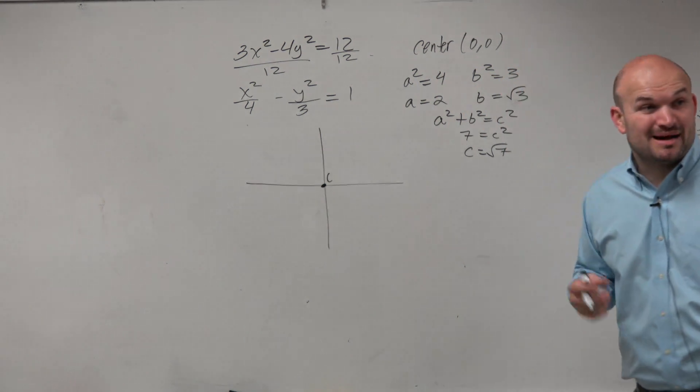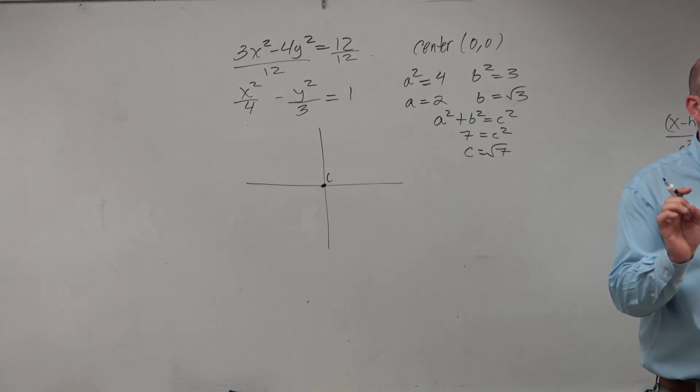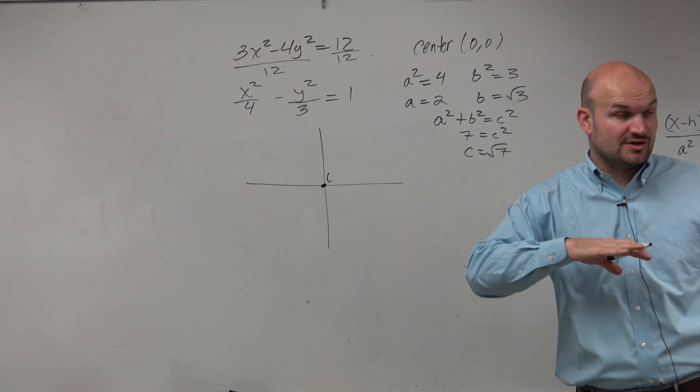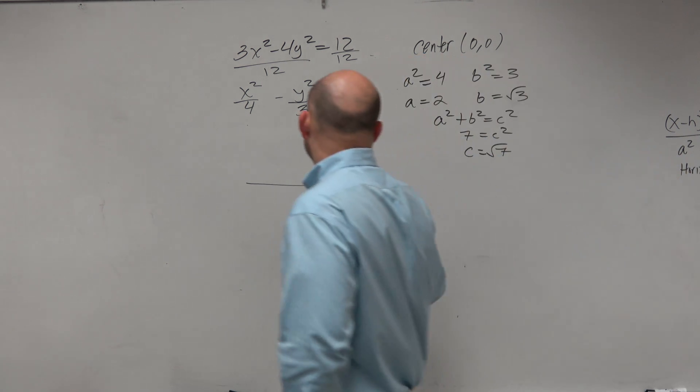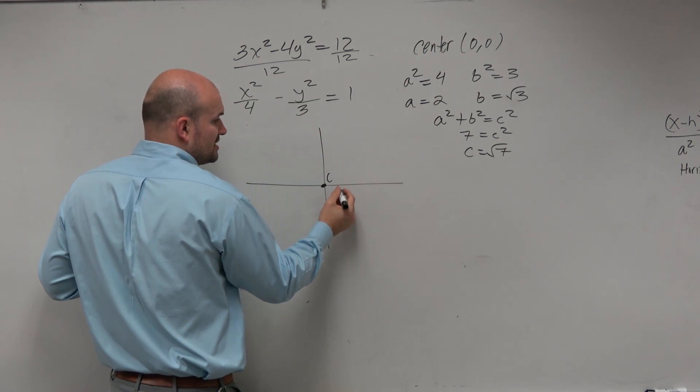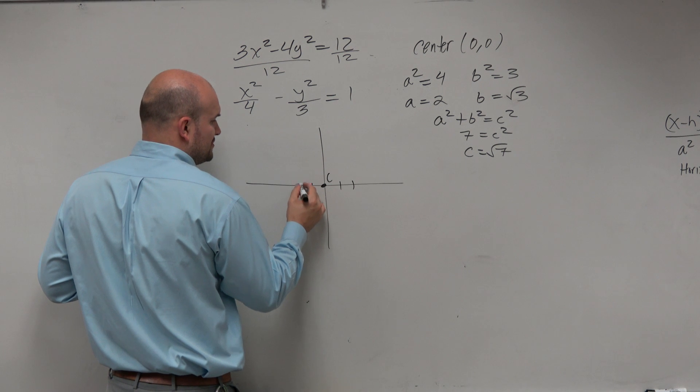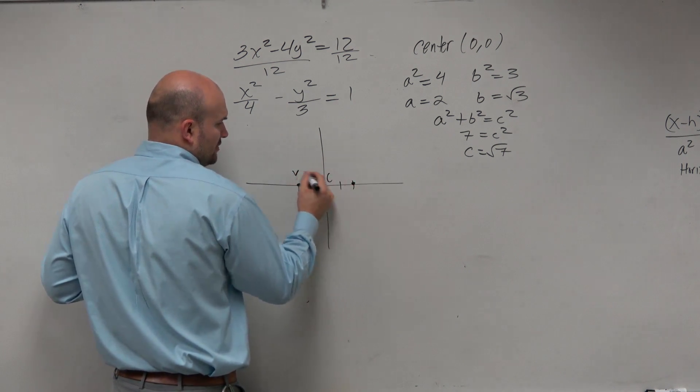My a squared is under my x. That means I have a horizontal transverse axis. And the distance of my vertices is 2, just like an ellipse. So I'm going to go 2 to the left, 2 to the right. Vertice, vertice.